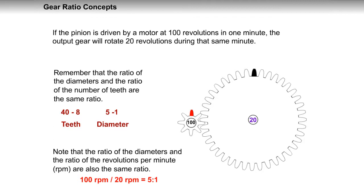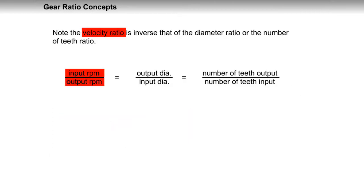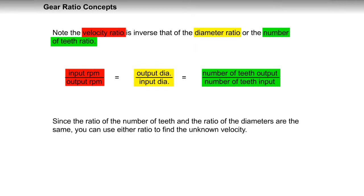Remember that the ratio of the diameters and the ratio of the number of teeth are the same ratio. Note that the ratio of the diameters and the ratio of the revolutions per minute are also the same ratio. 100 RPM to 20 RPM equals 5 to 1. Note the velocity ratio is inverse that of the diameter ratio or the number of teeth ratio.